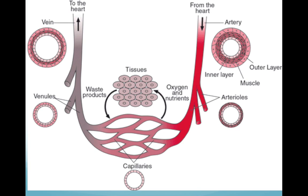Arteries carry blood away from the heart. They have a thick, muscular wall, and the arterioles are just smaller arteries. The arterioles' diameter can be regulated by the nervous system, and that's kind of how your brain controls your blood pressure — by regulating those arterioles. The arterioles are going to branch into capillaries, which are very, very narrow microscopic tubes with a wall composed of only one layer of cells, so it's a very thin wall.